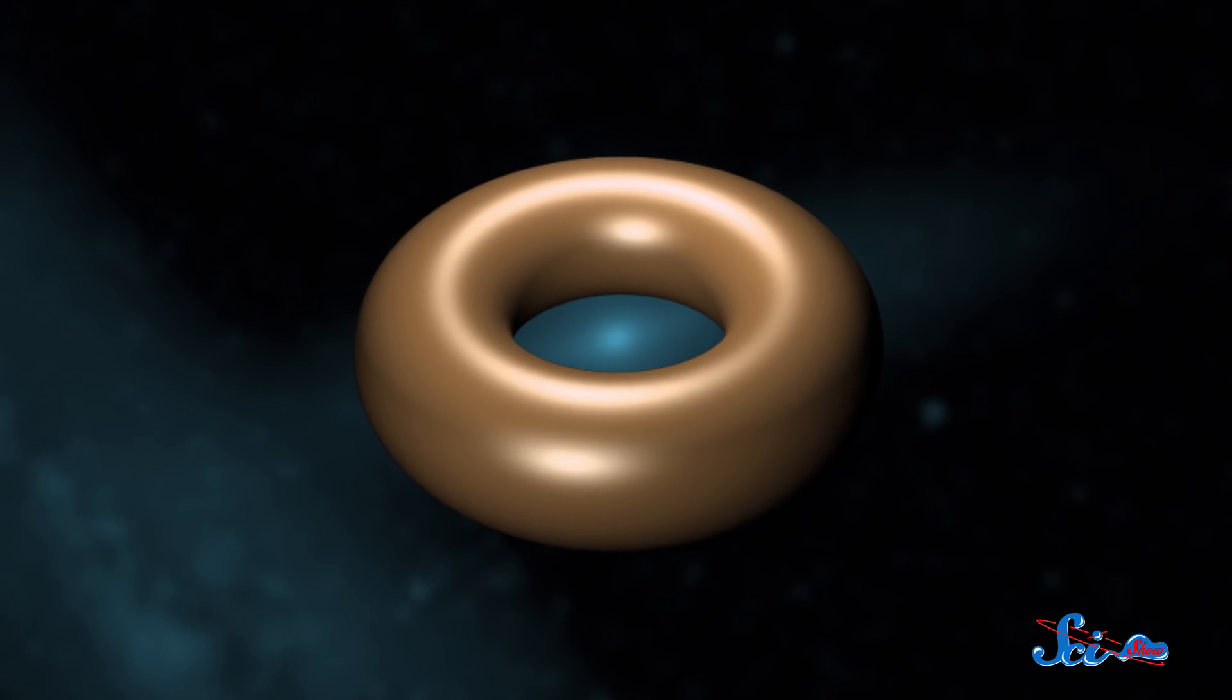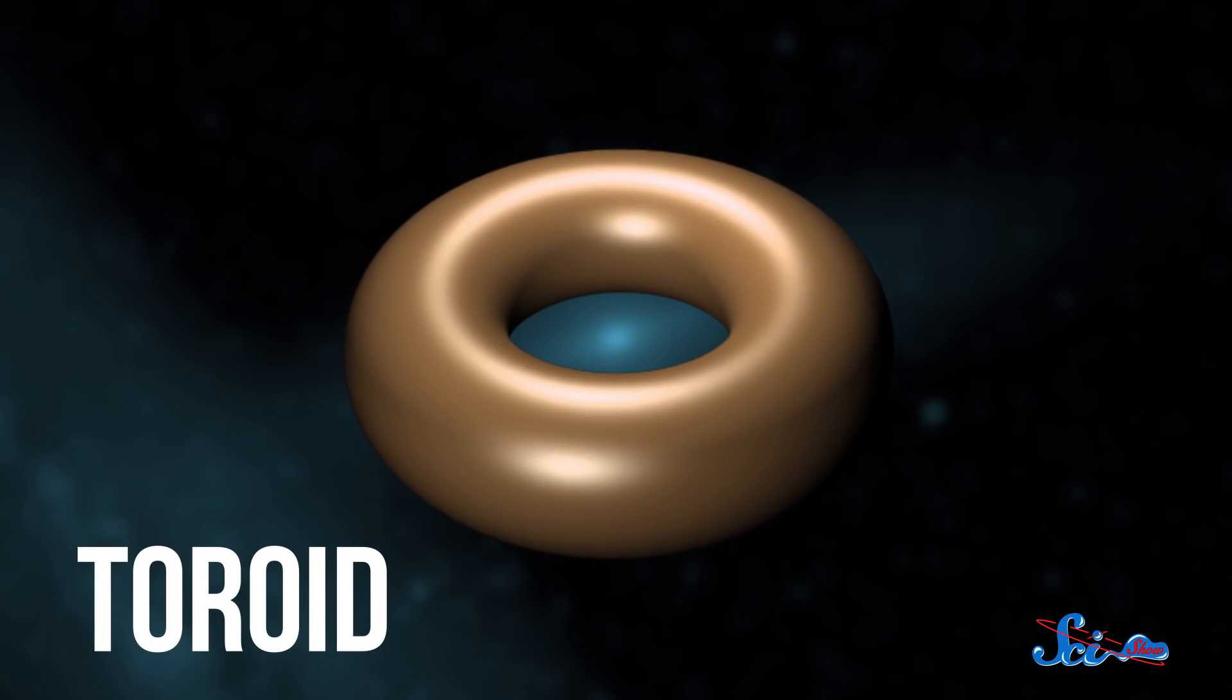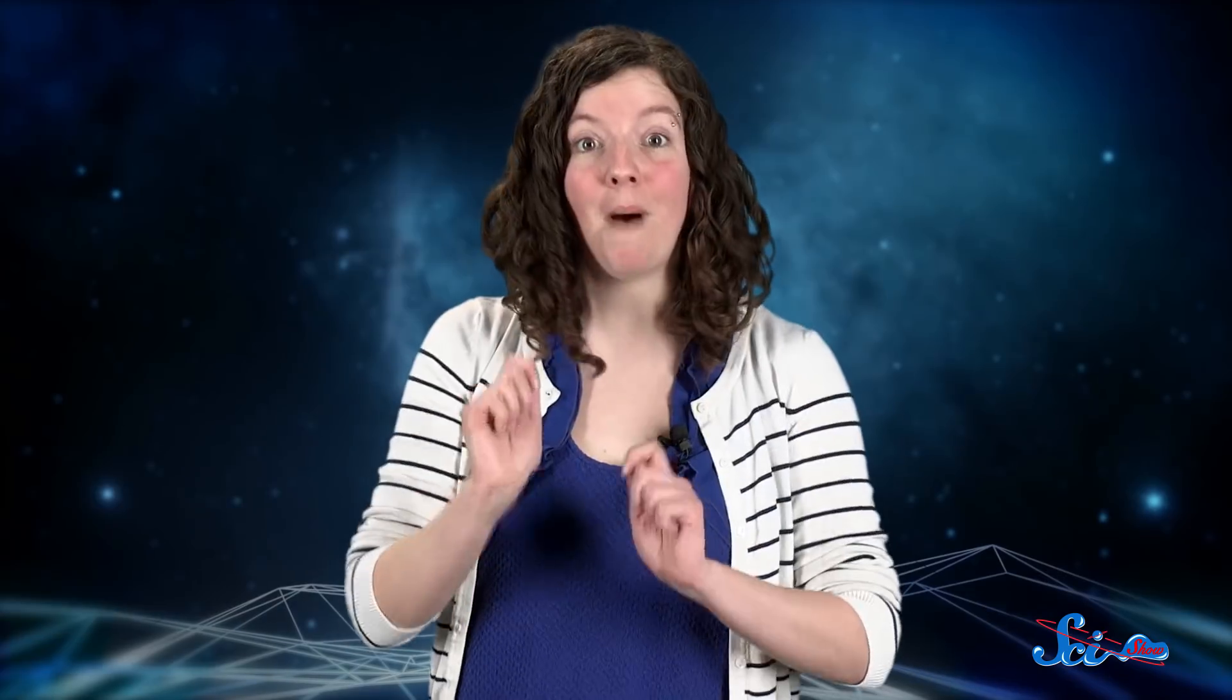Under the right conditions, a planet could end up shaped like a donut, or what an astrophysicist might call a toroid. It's unlikely, but physics tells us that it is possible.